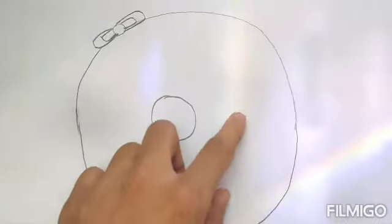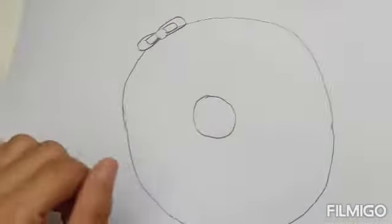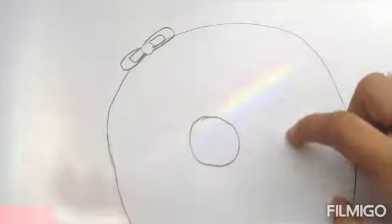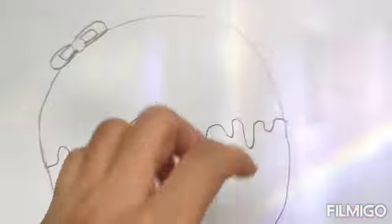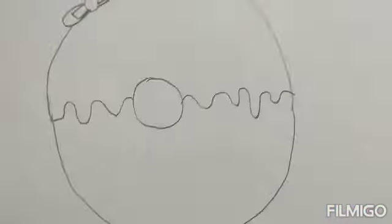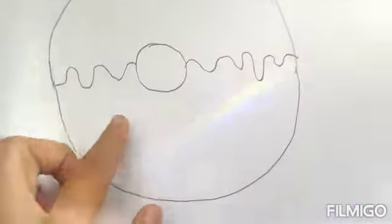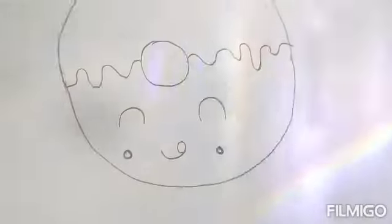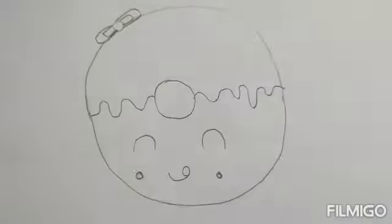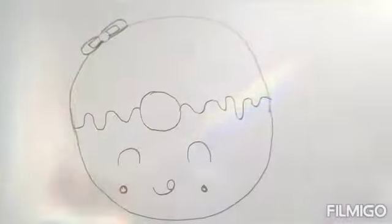Now we are going to draw the zigzag lines here - not like zigzag, but like a melting chocolate. Now we are going to draw the eyes of the donut like that, and now we will color it.